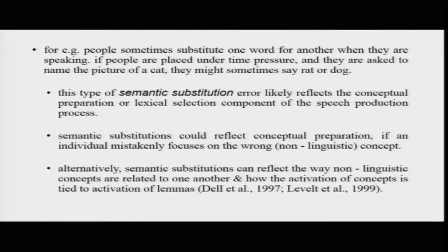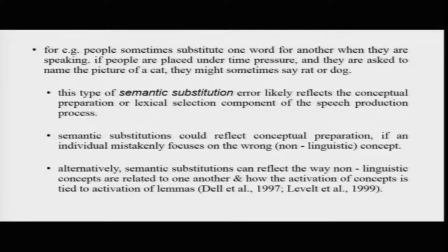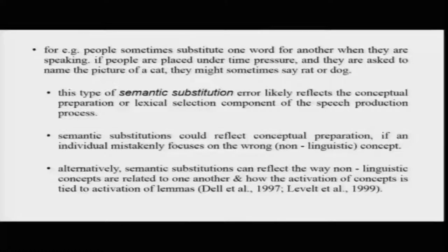Semantic substitutions can reflect conceptual preparation breakdown — where an individual has mistakenly focused on the wrong concept because the mind wanders. Alternatively, it has been proposed that semantic substitutions reflect the way non-linguistic components are related to each other and how the activation of those concepts is tied to the activation of lemmas. If you recall semantic networks theory, concepts in the mind are linked to each other as nodes, and closely related concepts are closer together.